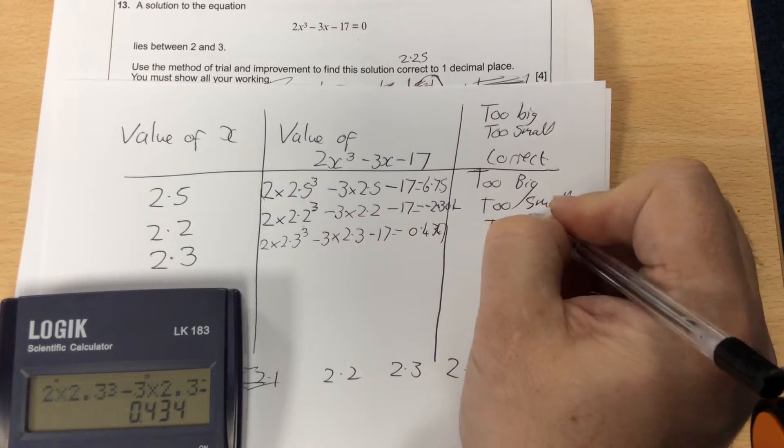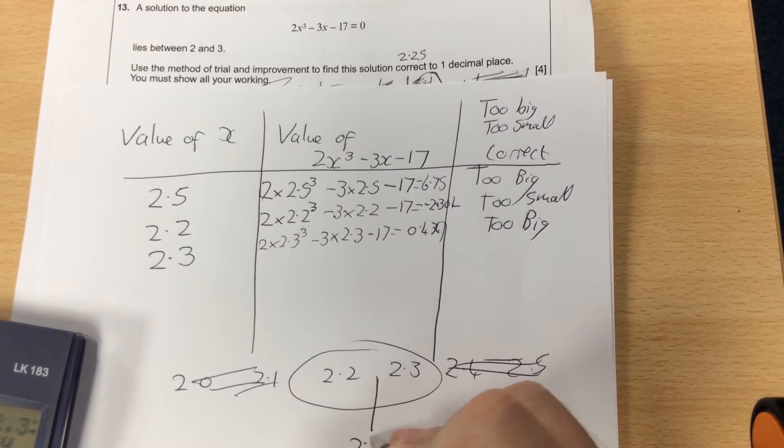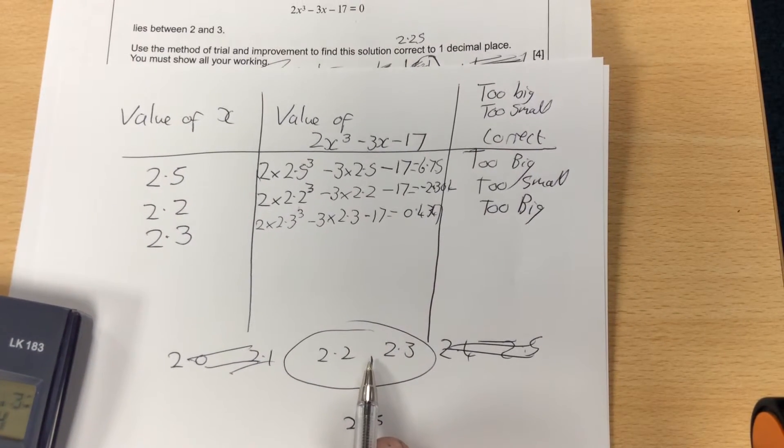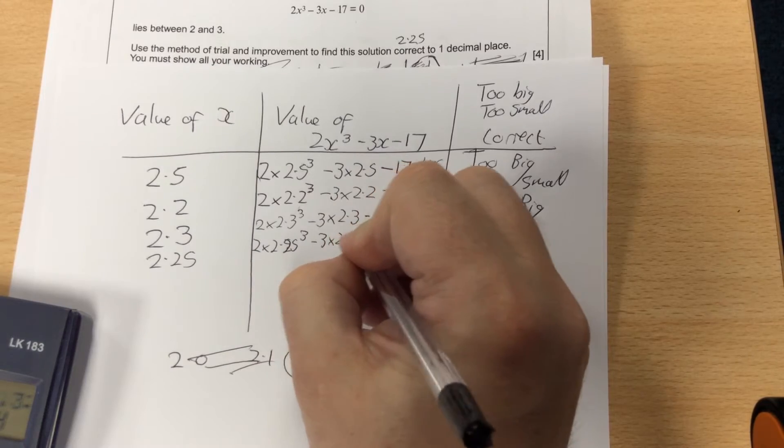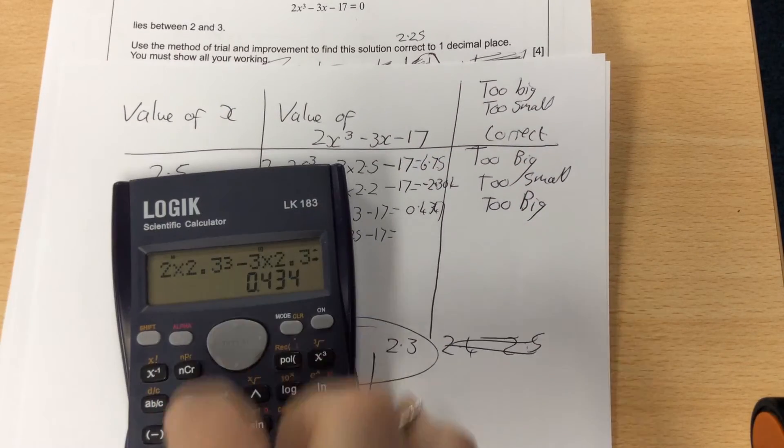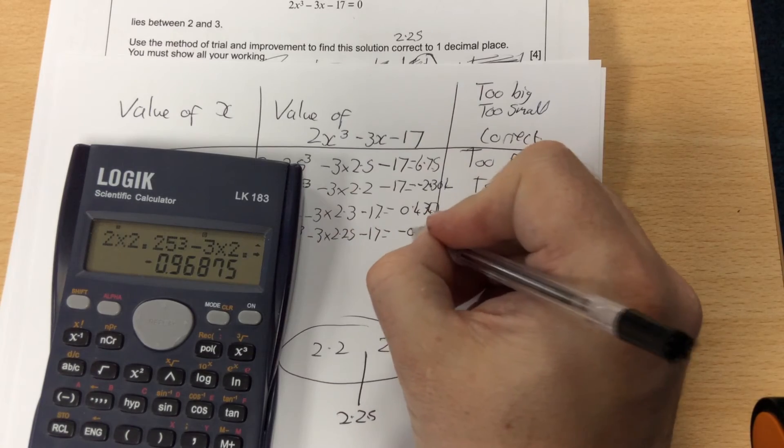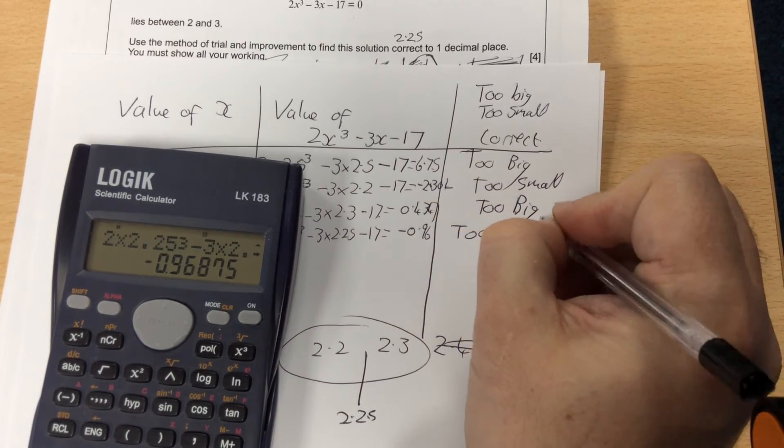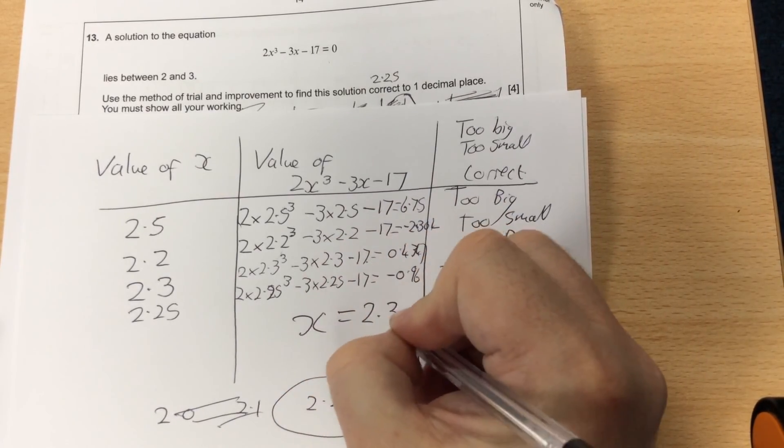So we now have got the answer is either, because I wanted the one decimal place as one of them too. So what I'm going to do now is try the value in the middle, 2.25. If that is too big, it's going to be closer to 2.2. If that's too small, it's going to be closer to 2.3. So let's try 2.25. So it becomes 2 times 2.25³ - 3 times 2.25 - 17. That's -0.96, which is too small. So because that's too small, it's going to be in this region here, between 2.25 and 2.3. So the answer to this one is 2.3.